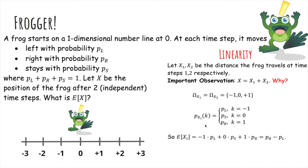And so the expected value of one time step displacement is just negative 1 times PL, plus 0 times PS, plus PR. And you just get PR minus PL, which kind of makes sense.